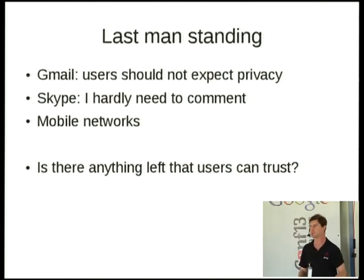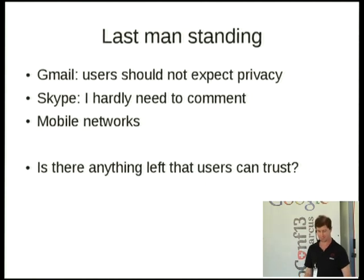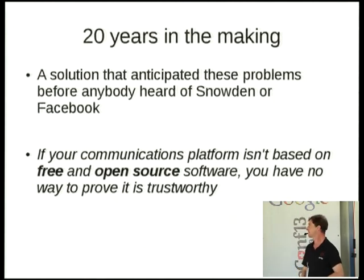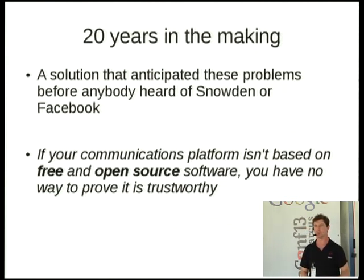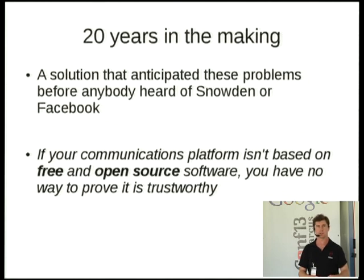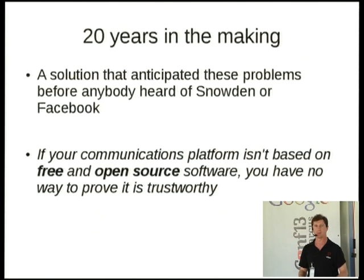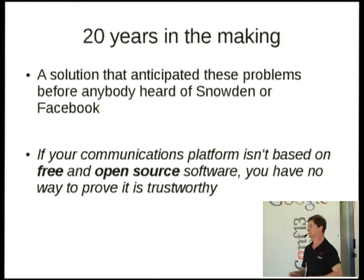Skype — I'm not going to say so much about it. Mobile networks around the world, we've seen similar patterns. But there is something users can trust. It's been 20 years in the making — a solution that had anticipated these problems from the beginning. I'm talking about Debian, I'm talking about free software. Richard Stallman has been talking about this for years, even before Debian started. If your software is not free, if you don't have the source code, how can you know what's in there? How can you know your software isn't the next iteration of that London rubbish bin?